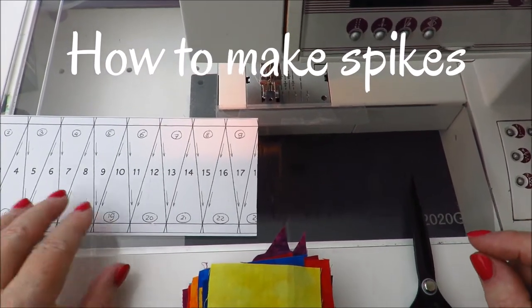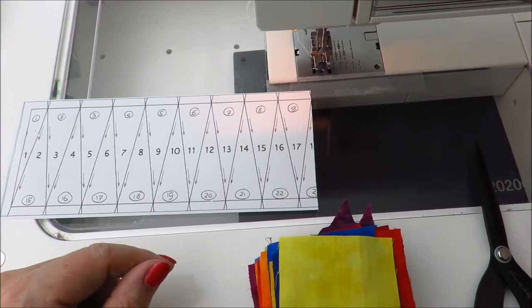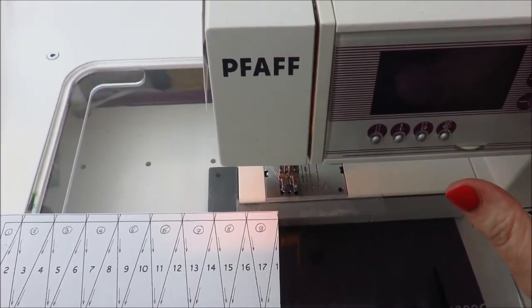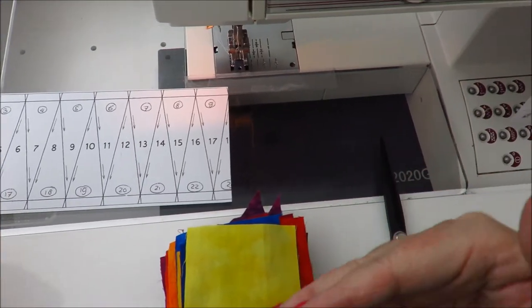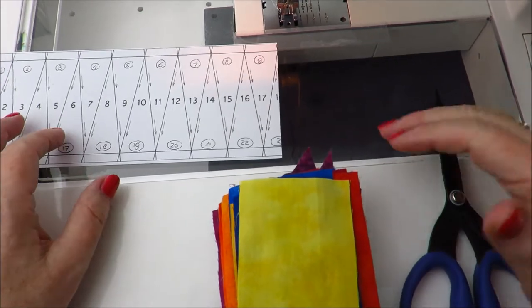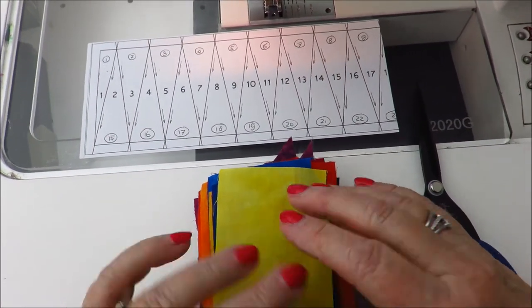Hello ladies, I'd like to show you how I make my spikes. As you can see we only need four things: a very basic sewing machine, some white thread because I like to use white thread when I start paper piecing, my template, and of course the fabrics.